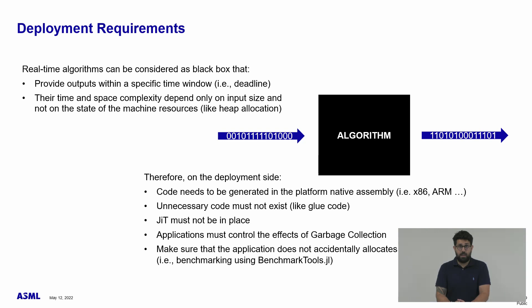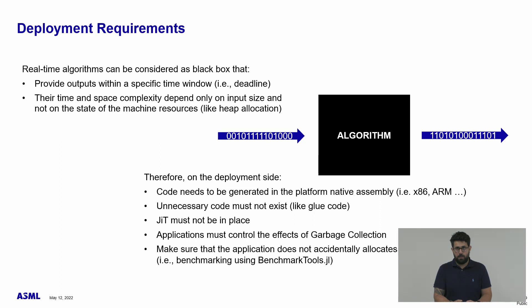On the deployment side, we need to package the algorithm and the code needs to be generated as platform-native assembly code, which means that the code of the real-time algorithm shall not be translated into an intermediate language like C or C++. We want the compiler to perform all the optimizations upfront on the IR form, like it happens with Clang or the Rust compiler. We don't want unnecessary code, like the glue code produced by code generation tools. JIT must not be in place, because the real-time process hosting our code cannot be stopped during its execution to compile new code.